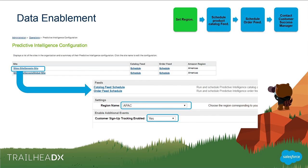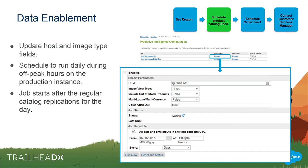Into data enablement — the first step. You're going to set your region. There are only three regions: if you're in Asia, you do APAC; if you're in Europe, you do EMEA; anywhere in the Western Hemisphere, you set it to Americas. If you want to track when customers register for new accounts and map their anonymous behavior prior to that point to an actual email address, marking that to yes will allow you to do that.